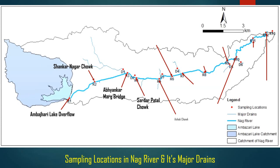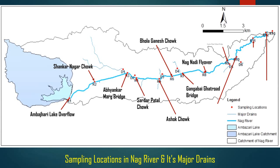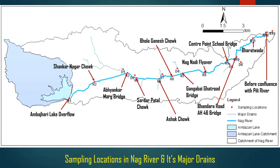The sampling locations of Nag River were identified as Ambajhari Lake Overflow, Shunkarnagar Chowk, Abhyunkar Marg Bridge, Sardar Patel Chowk, Ashok Chowk, Bholaganesh Chowk, Gungabai Gaut Road Bridge, Nag Nati Flyover, Center Point School Bridge, Bundara Road AH 46 Bridge, Bharatwada, and before confluence with Pili River, along with 6 major drains designated as D1, D2, D3, D4, D5, and D6.